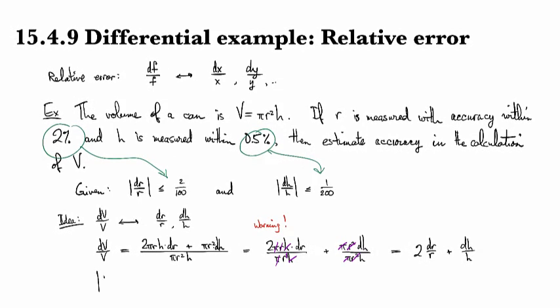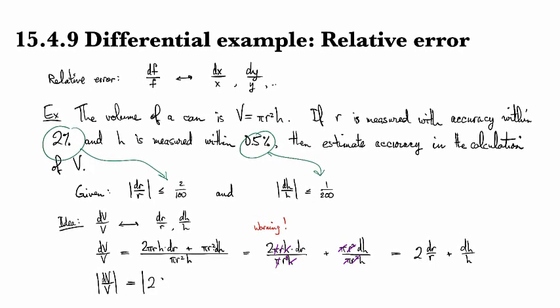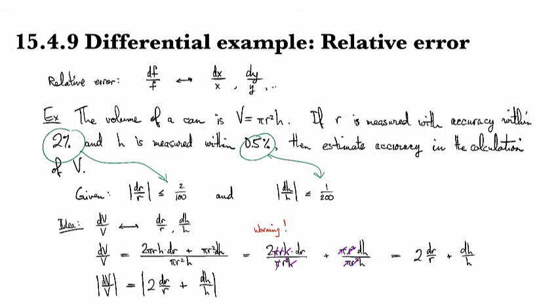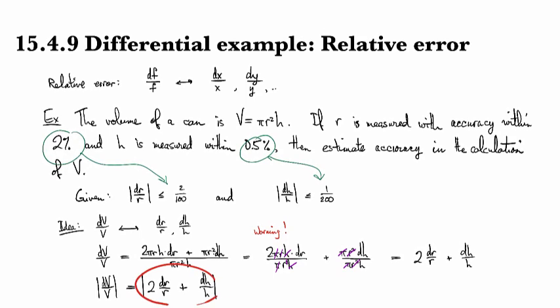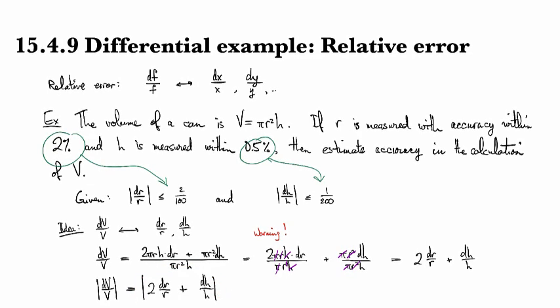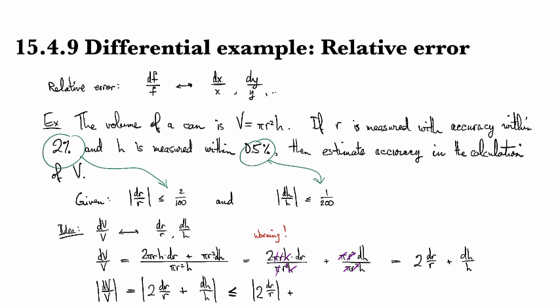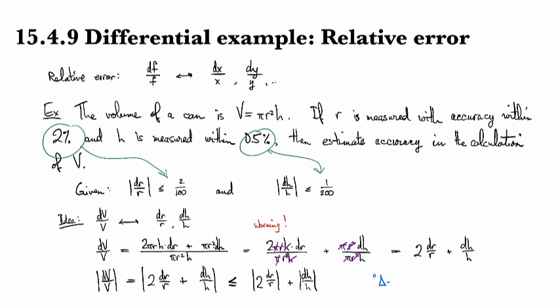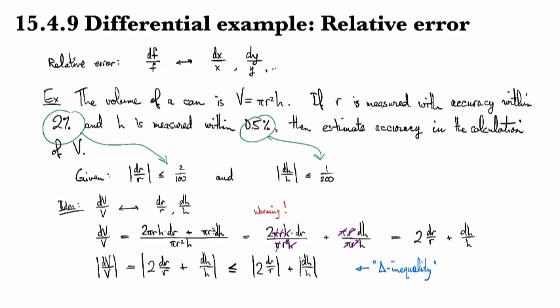So then my bound for the relative error here is going to be the absolute value of 2 dR over R plus dH over H. And it's an important fact called the triangle inequality that if you have the absolute value of a sum, you can replace it with an inequality for the sum of the absolute values. By which I mean, if I'm willing to put an inequality here, I can split it. This is called the triangle inequality, and it's very useful for making estimates.